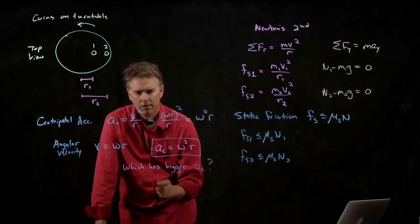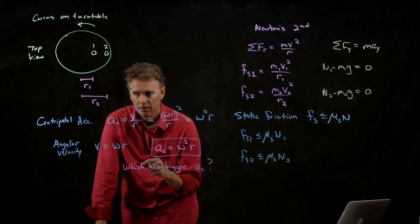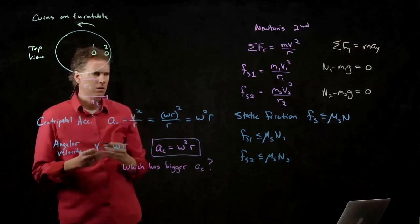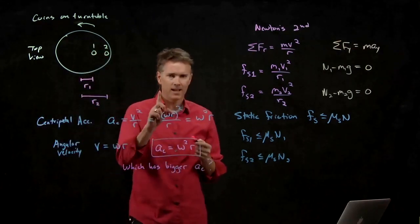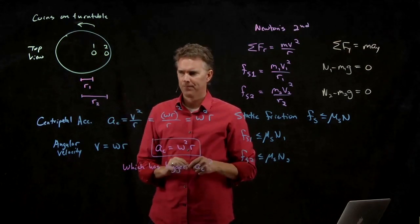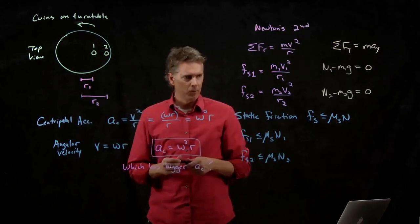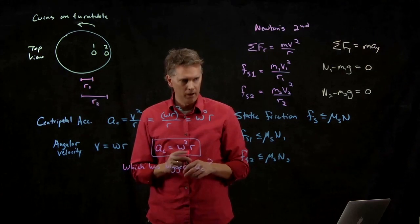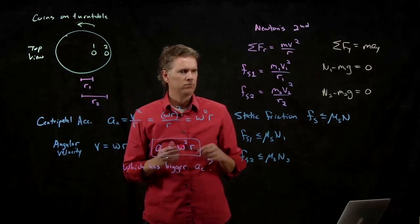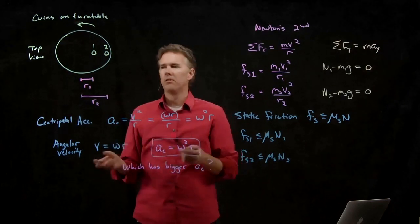Omega is radians per second. So if coin 1 goes around once in a second, what is omega for coin 1? I'm asking you guys in front of me. What is omega for coin 1 if it went around in one second? 2 pi radians per second.